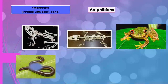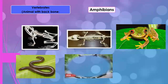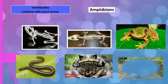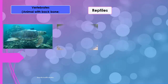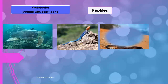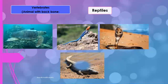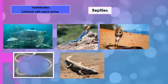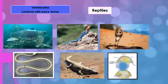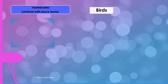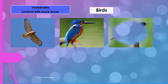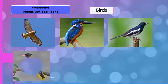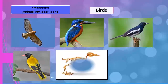Amphibians include frog and salamander. Reptiles include turtle, lizard, snake, and crocodile. Birds include hawk, kingfisher, magpie, and oriole.